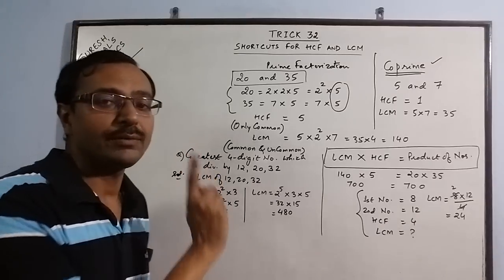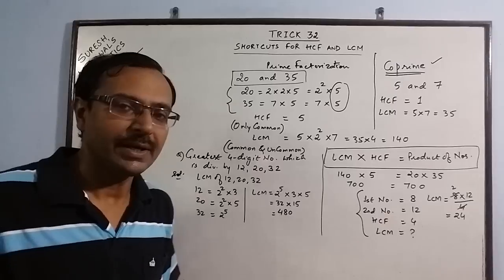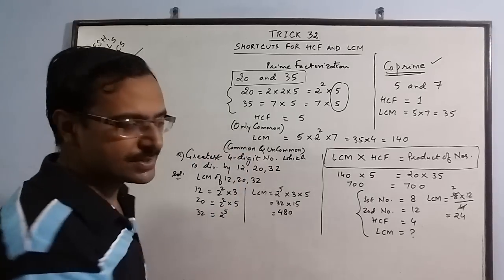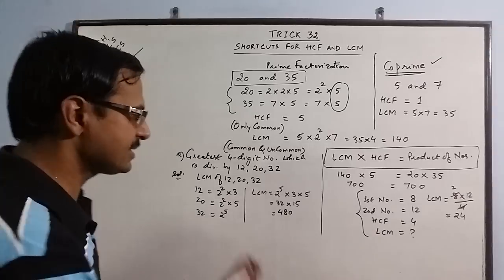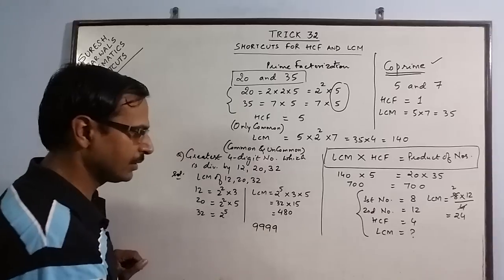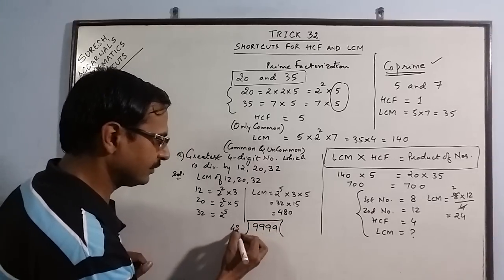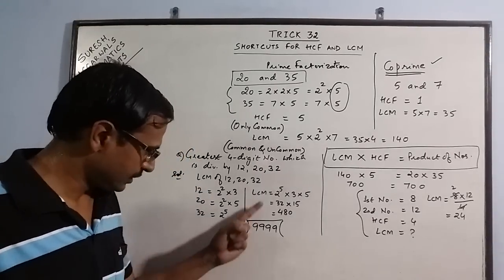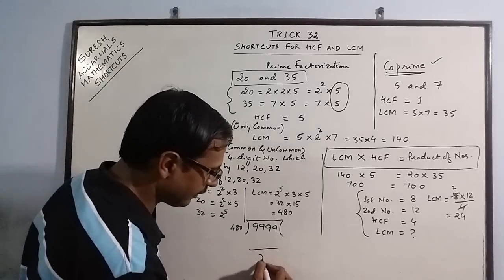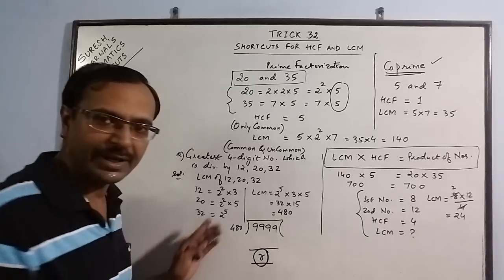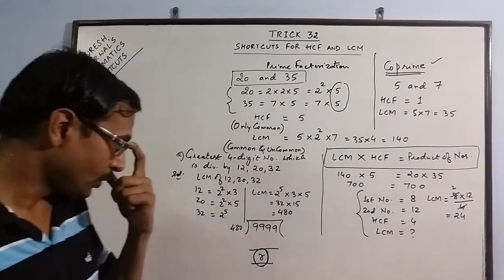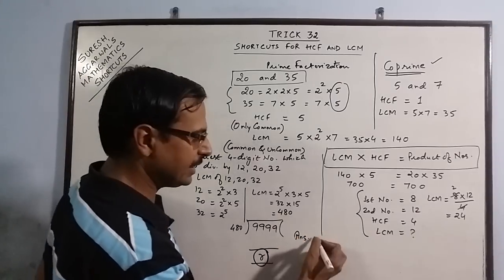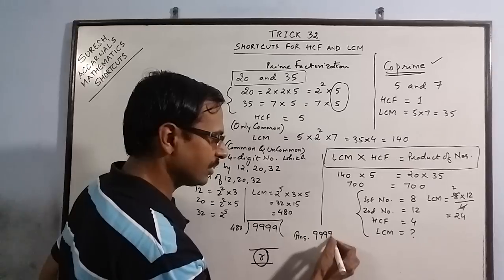For solving this question you have to find out the LCM really quickly so that you can save some time in this question. Now for finding the greatest 4 digit number what we do is we divide this number 9999 which is the greatest 4 digit number by the LCM. Now when we have the LCM of these 3 numbers we divide it and we find the remainder. I am not dividing it actually. I am just telling you the method of solving this. So we will find the remainder.